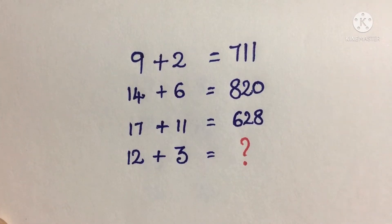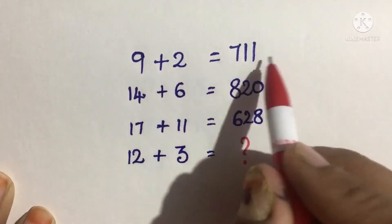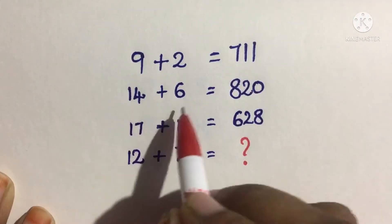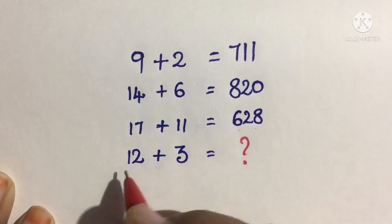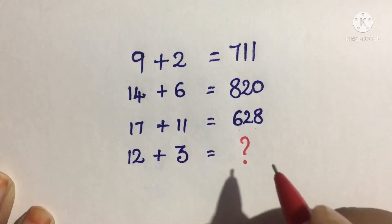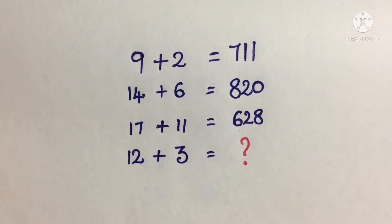Hello guys, welcome to LP Mixtures. Today I am presenting puzzle number one. Look at this: 9 plus 2 equals 711, 14 plus 6 equals 820, 17 plus 11 equals 628, and 12 plus 3 equals what? Find out the answer and let me know in the comment section.